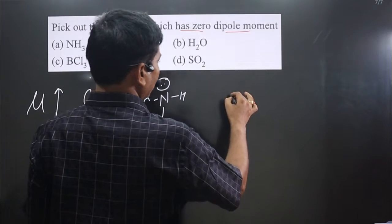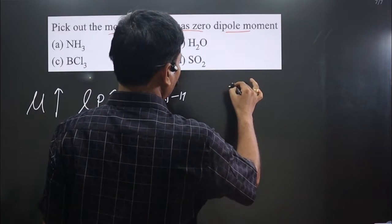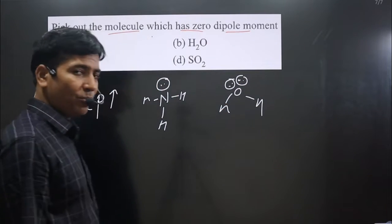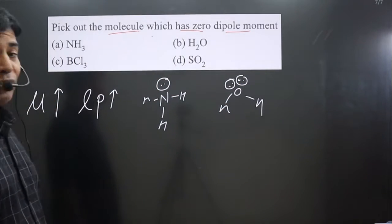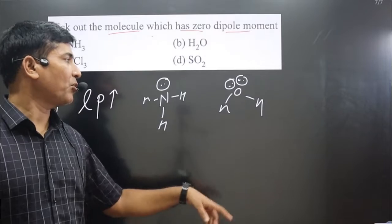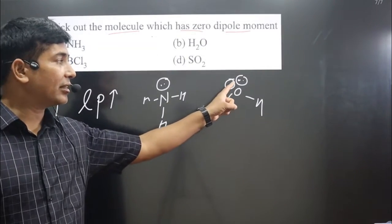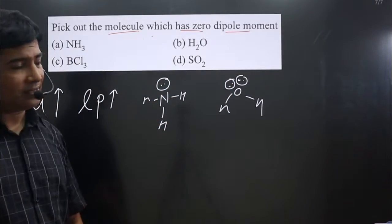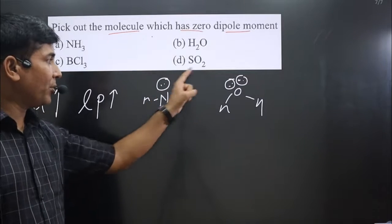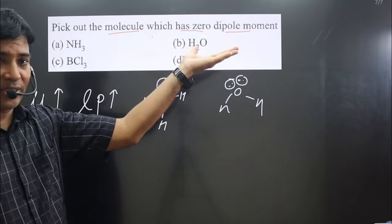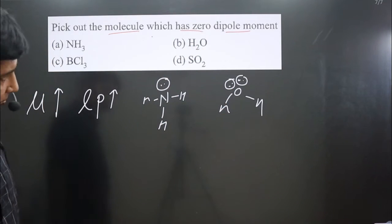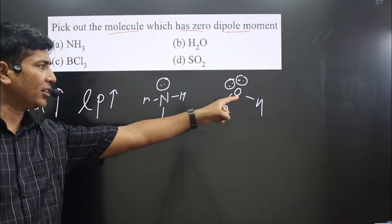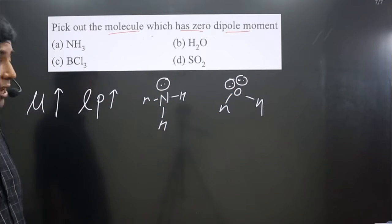The second molecule is H₂O. Oxygen is having two lone pairs and two hydrogens. Comparing which has higher dipole moment — water has higher dipole moment because it has two lone pairs versus ammonia's one lone pair. As lone pairs increase, dipole moment increases, so water is more polar than ammonia.